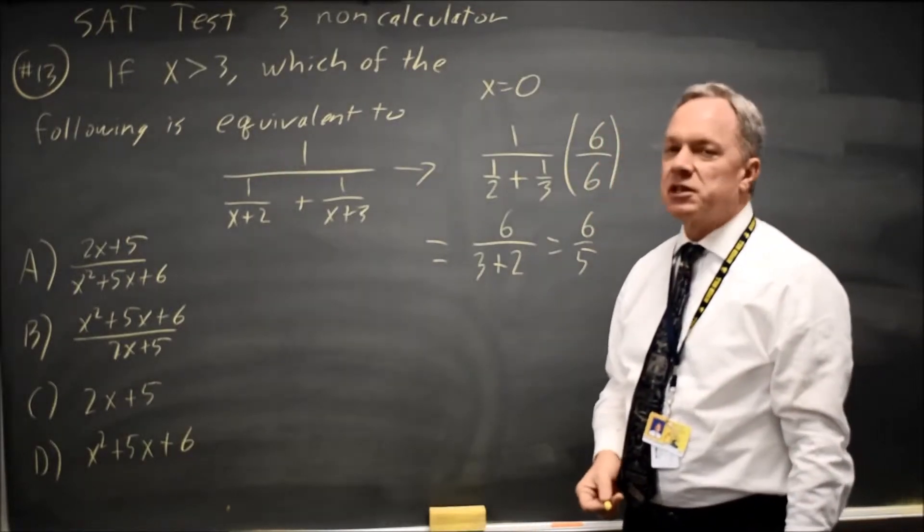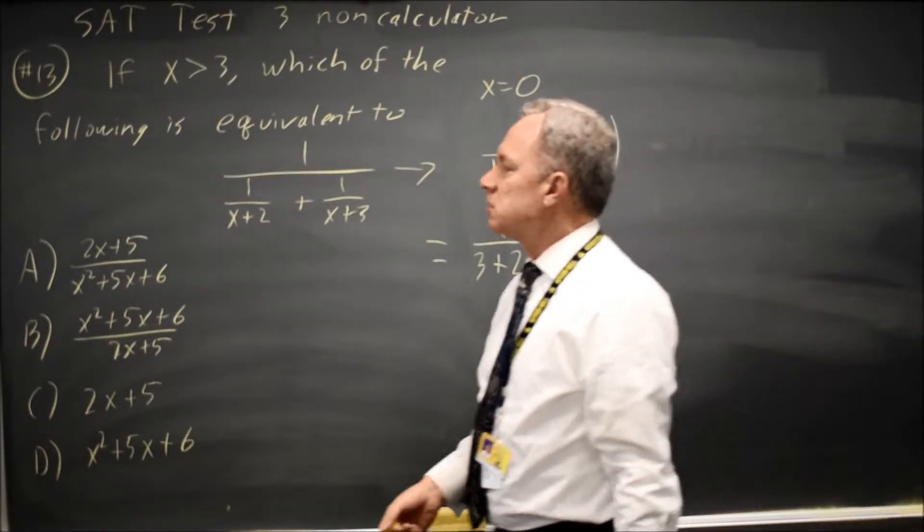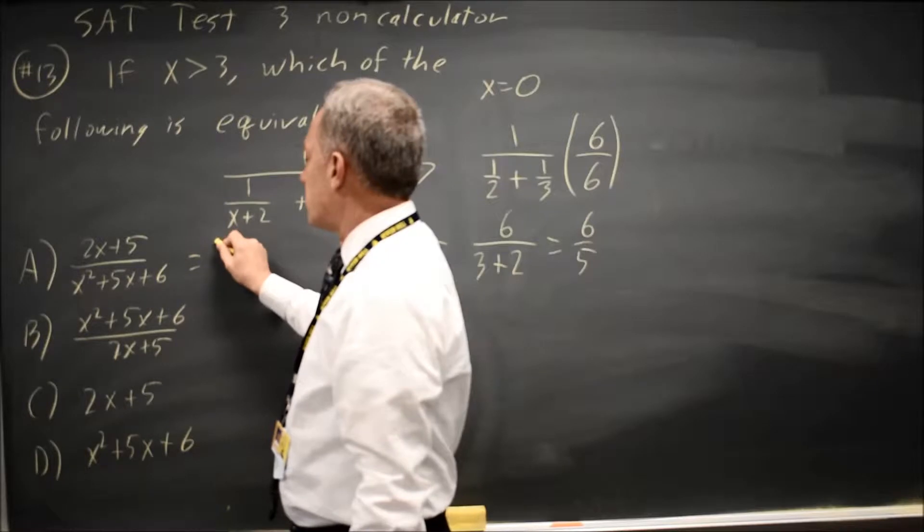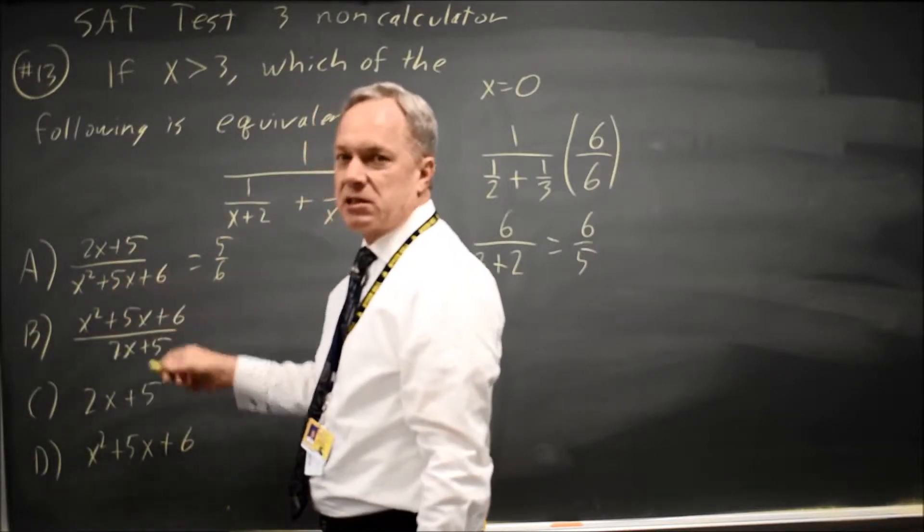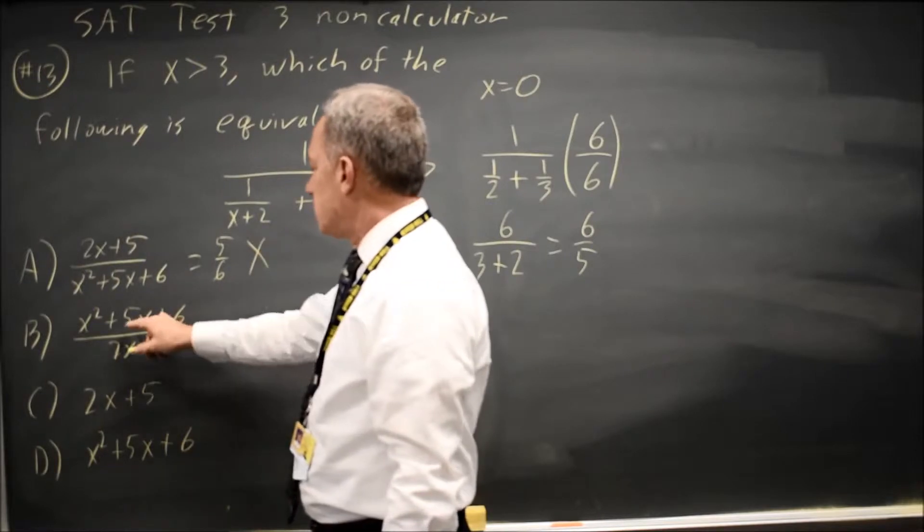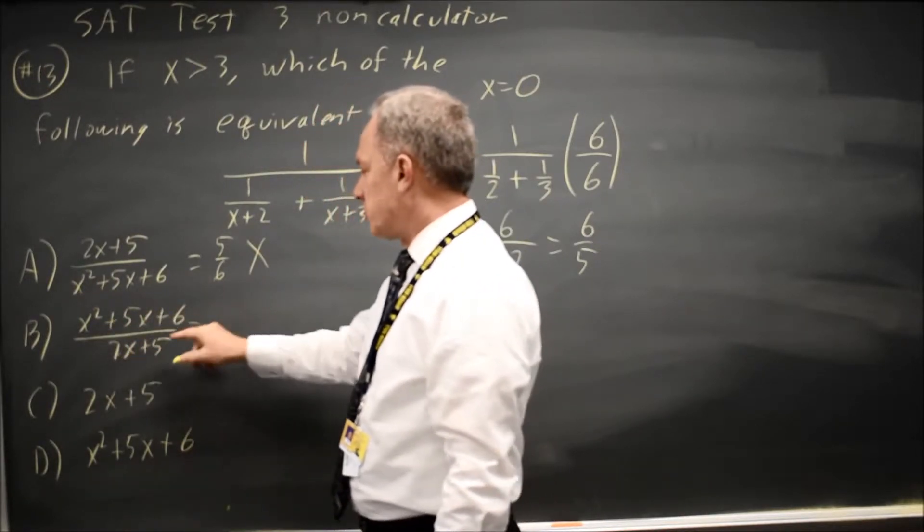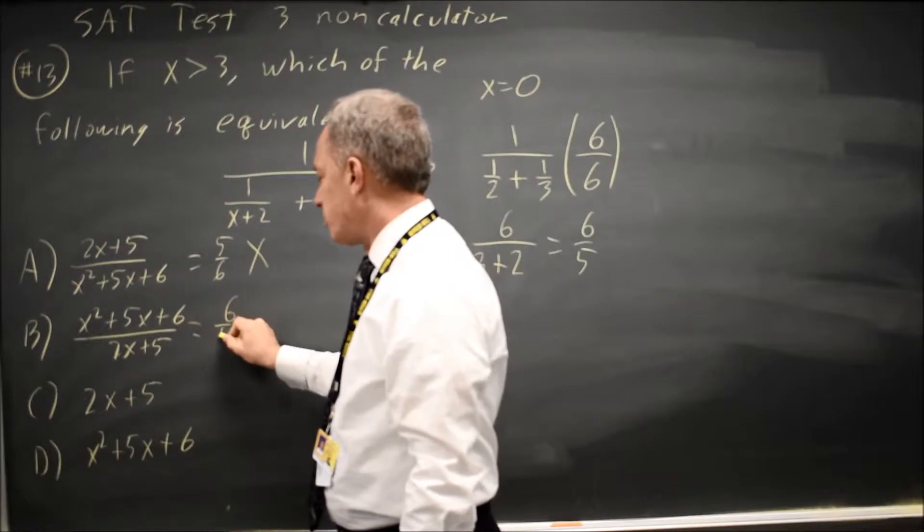The correct answer will give 6 over 5 at x equals 0. So let's try that. This is 5 over 6, 0 plus 5 over 0 plus 0 plus 6, which does not match. This one is 0 plus 0 plus 6, over 0 plus 5 is 6 over 5.